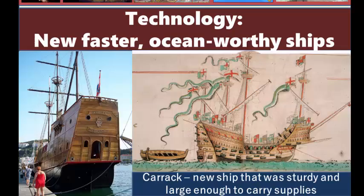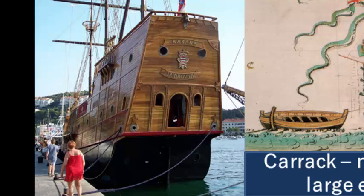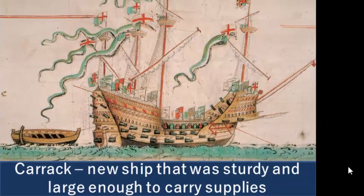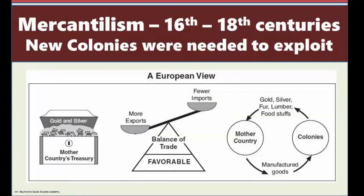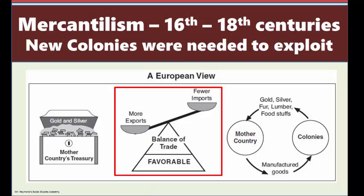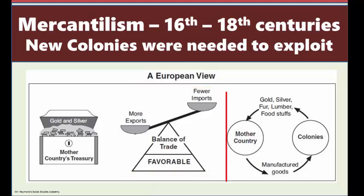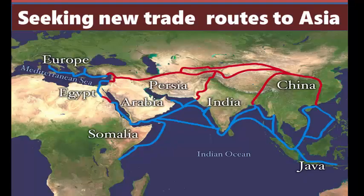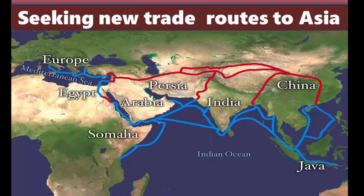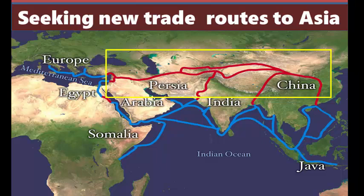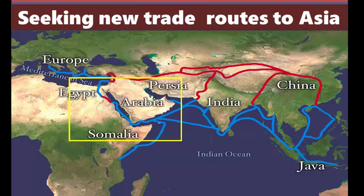New, faster, ocean-worthy ships such as the Carrack were developed, which were sturdier and large enough to carry more supplies, making long voyages on the open sea more feasible. An economic theory known as mercantilism led to trade competition throughout Europe. This idea of mercantilism, in which a country wanted to export more than it imported, put pressure on European leaders to seek out colonies whose natural resources could be exploited. Traders also needed to make a profit, and at this time the most sought-after luxury goods, such as spices and silk, were only available in far-off Asian lands, which required long overland journeys like those along the Silk Road or through Egypt, which connected the Mediterranean to the Red Sea.